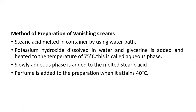Method of preparation of vanishing cream: Stearic acid is melted in a container using a water bath. Potassium hydroxide is dissolved in water and glycerin is added, then heated to 75 degrees centigrade — this constitutes the aqueous phase. The aqueous phase is added to the melted stearic acid. On cooling, when the temperature is reduced, perfume is added.